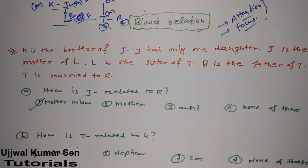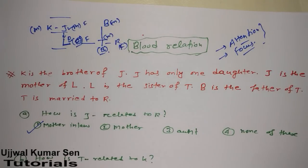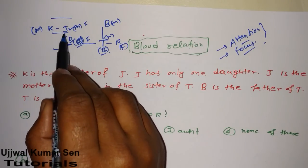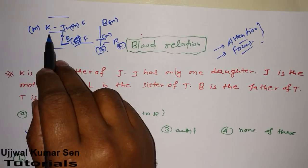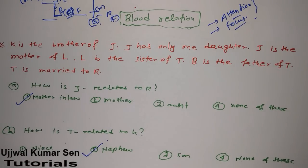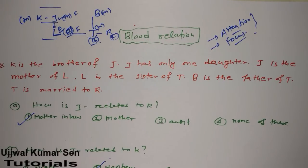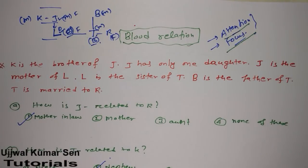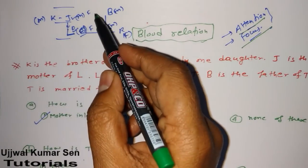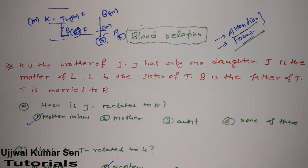Next question is: how is T related to K? Look at this diagram — T is related to K as follows: K and J are brother and sister, and J is the mother of T. So K and T's relation must be nephew. The second option is the correct answer. This is the way to solve blood relation questions. The most important things, as I shared with you, are attention and focus. You should be focused on the question, then make a diagram — if you have both, make the diagram, read the question, and solve it. You can maintain very good accuracy.